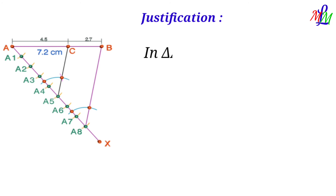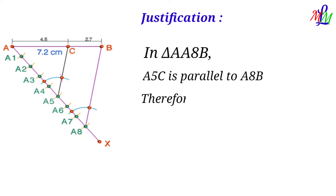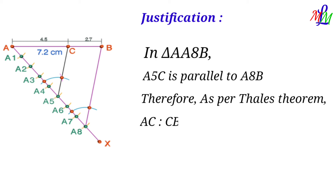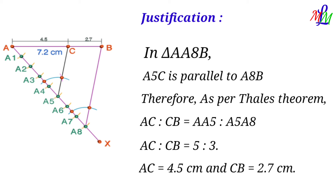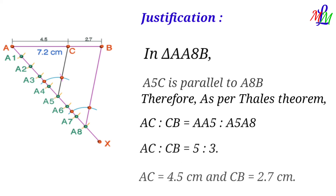In triangle A8B, since A5C is parallel to A8B, by Thales theorem we can write AC by CB is equal to A A5 by A5 A8. Since A A5 is 5 units and A5 A8 is 3 units, AC to CB equals 5 is to 3. From the figure, AC equals 4.5 centimeters and CB equals 2.7 centimeters.